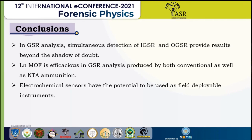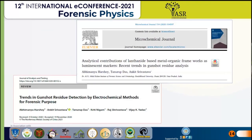In conclusion, in GSR analysis with the introduction of non-toxic ammunition, rather than doing only IGSR analysis it is more fruitful to also conduct OGSR analysis to gain information beyond reasonable doubt. The inclusion of lanthanide-based metal-organic frameworks helps to track the ammunition for effective analysis, and this methodology is suitable for both conventional ammunition and NTA. Electrochemical sensors may also be included with utmost care to clarify chances of false positive acceptance. I have two publications on these technologies — one in Elsevier and another in JO80 — which you can refer to. Thank you for this opportunity.